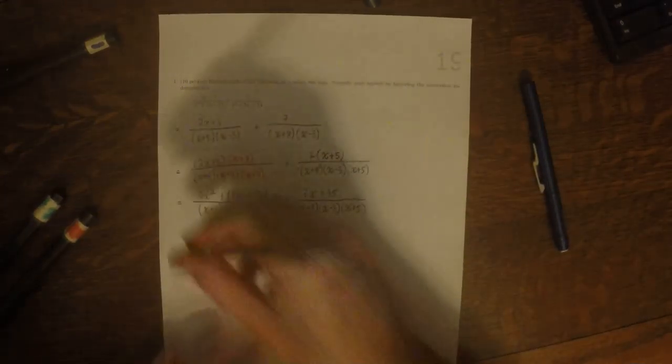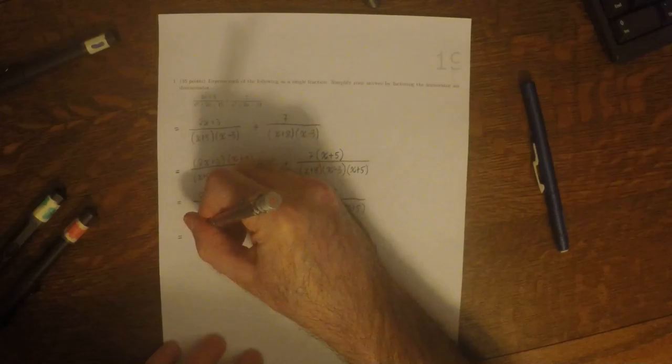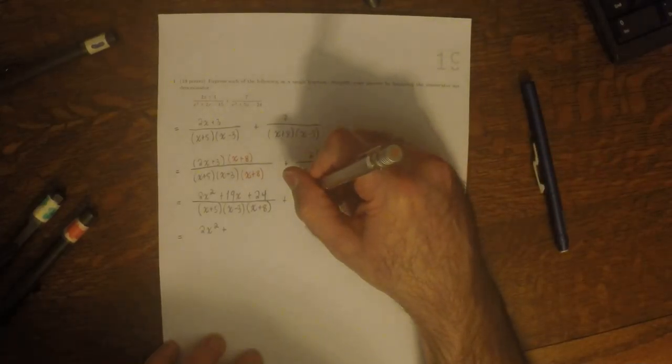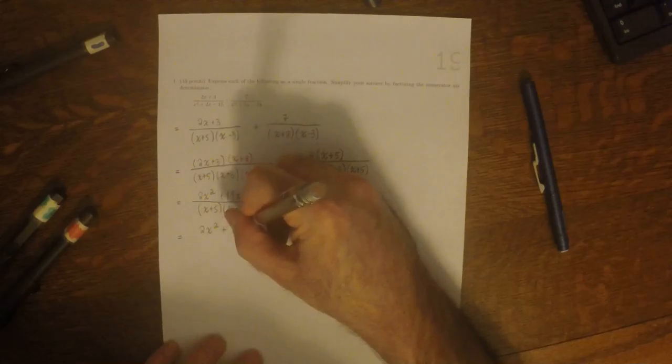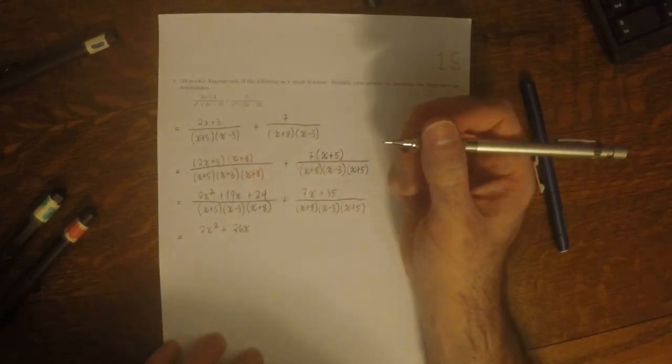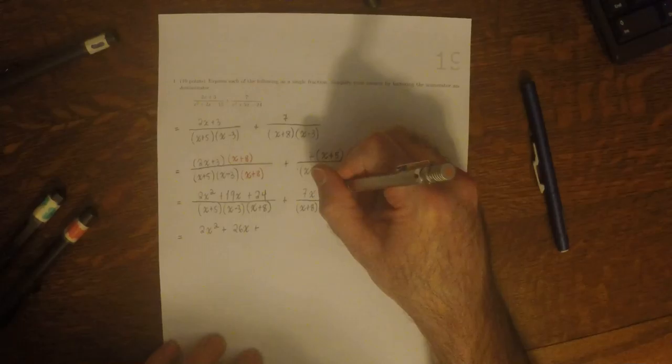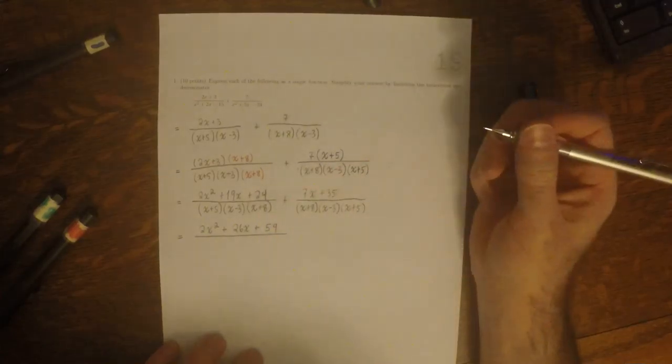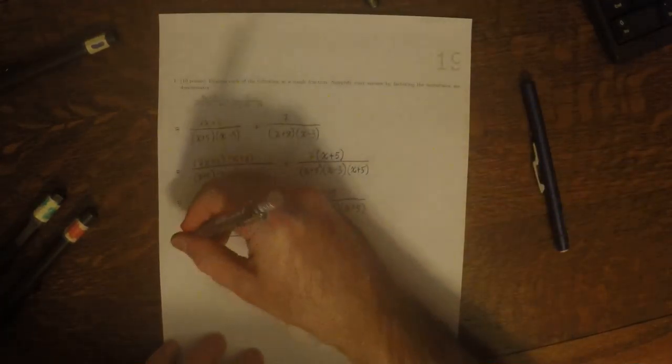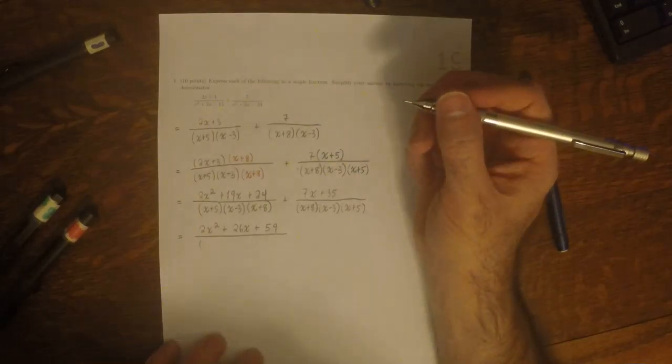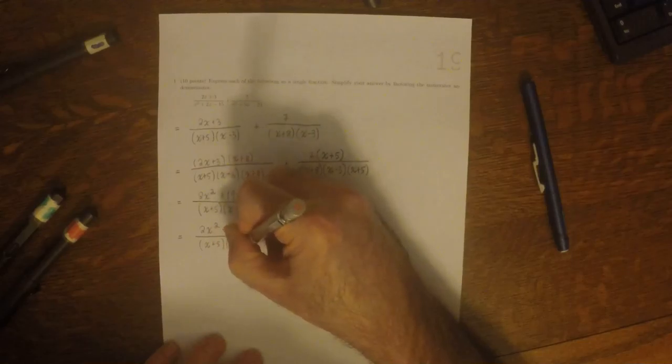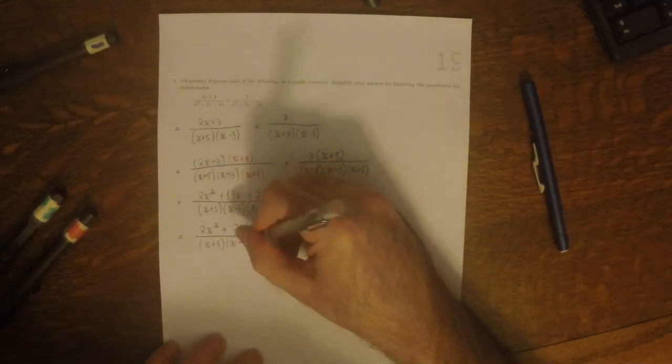And then combining these, that would be 2x squared plus 26x and then plus 59, and that would be over x plus 5, x minus 3, x plus 8. And that's the answer.